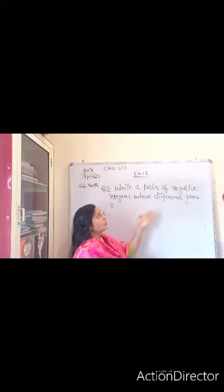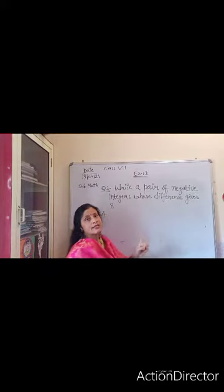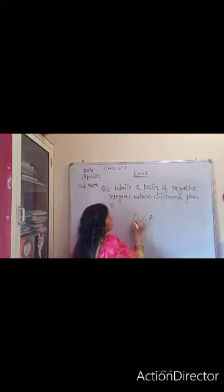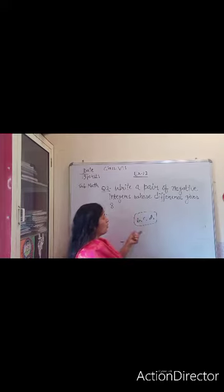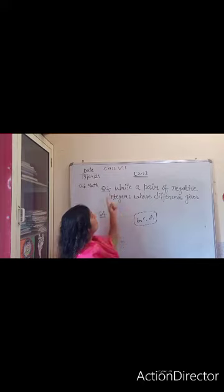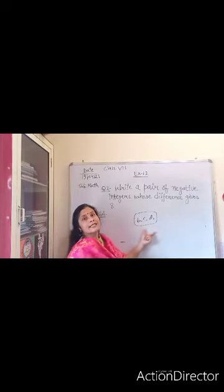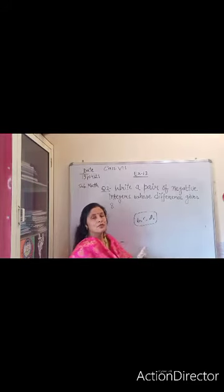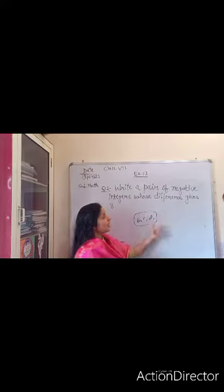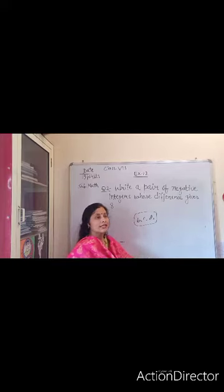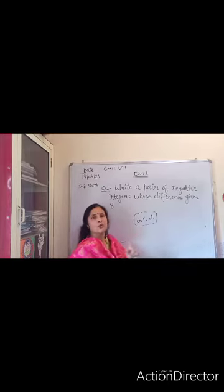We are going to do sums based on these properties. Earlier I discussed question number one's A part with you, and I gave you B, C, D as homework. I hope you all have done these three parts. Today we will move forward with question number two. If you have any query or problem related to these three questions, you can discuss during the online session. The online session is not for writing questions and answers at home — it is for sorting out your queries and problems. Wherever you find difficulty, you can mark your question and put it in that session. I will sort out your problem.